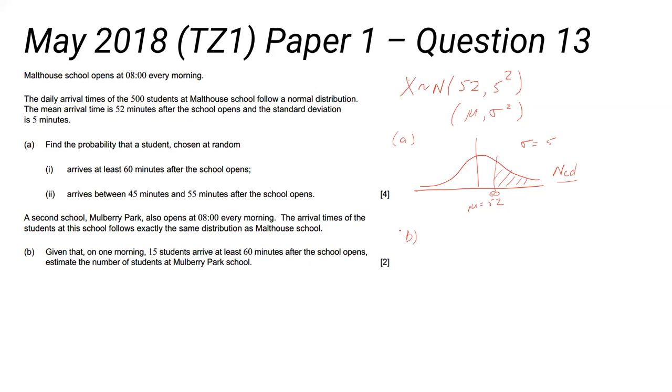They've actually thrown in another question here. Where, and this is quite tricky, mu is 52, sigma is 5. They said between 45 and 55 minutes. So you've got another NCD there. This time your lower is 45 and your upper is 55. So they've actually given you two NCD questions there. One where this is a right tail. And this is a center tail.